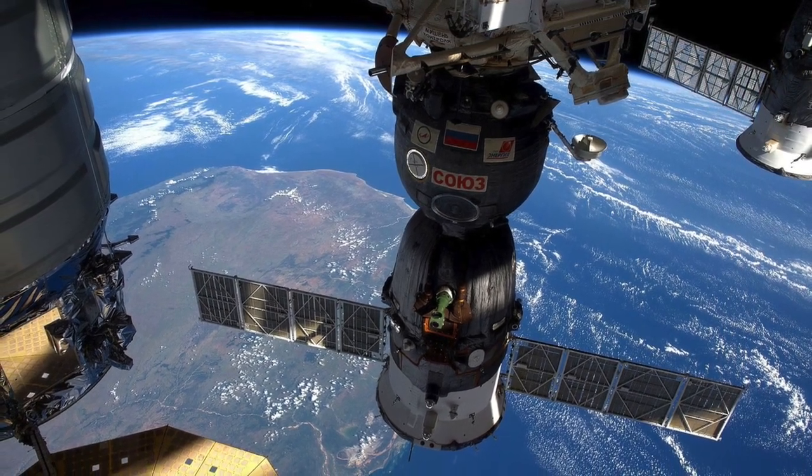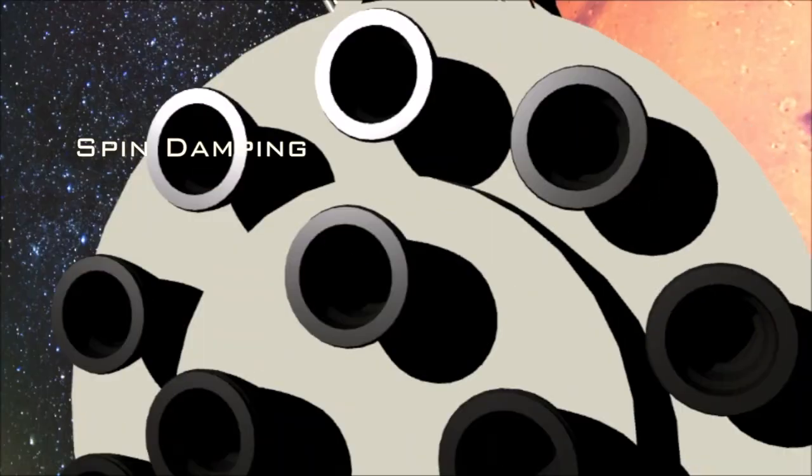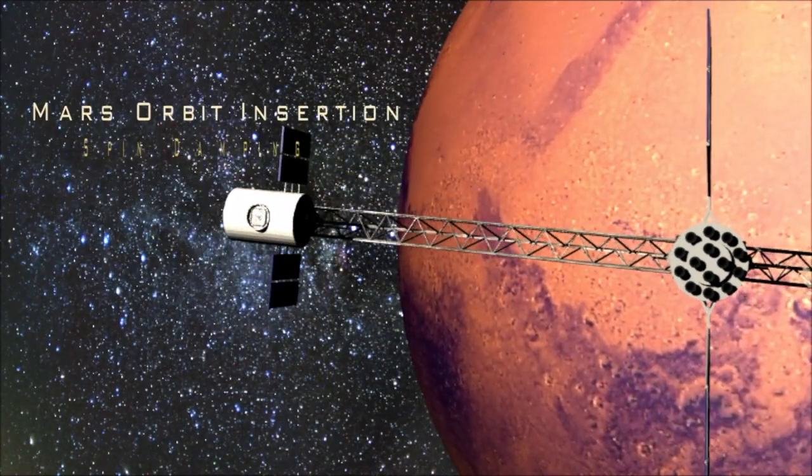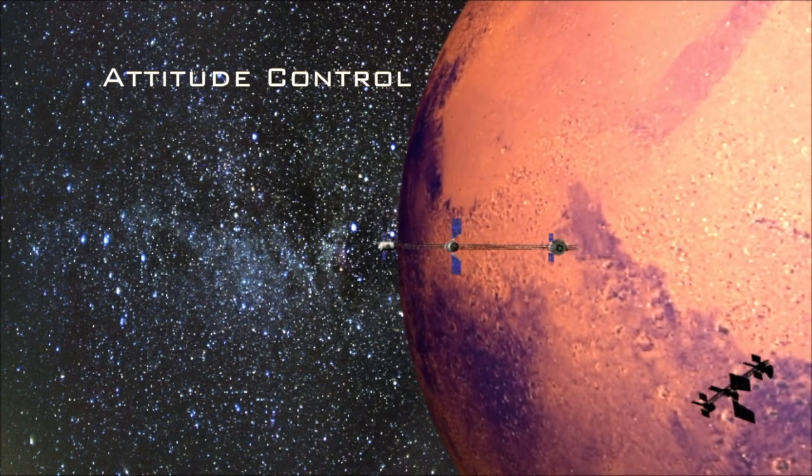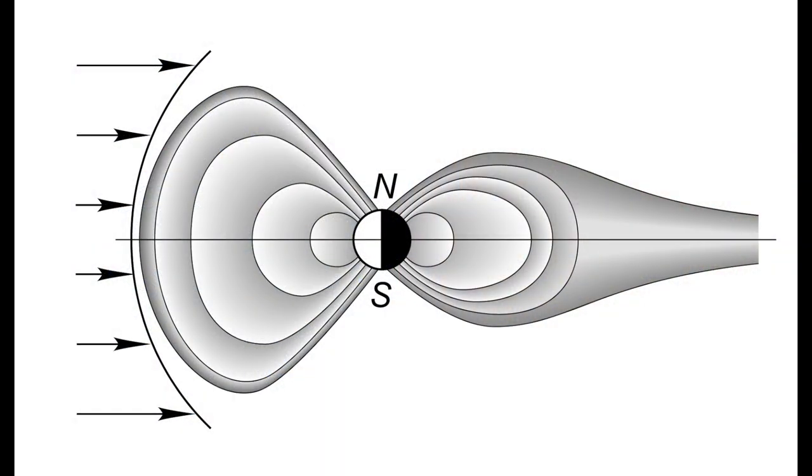One major obstacle to developing effective controllers is the non-linear and time-varying nature of the dynamics which these systems are designed to address. For example, for spacecraft in low Earth orbit, the magnetic field strength will vary along the satellite's path. This would, by definition, make the problem time-varying.